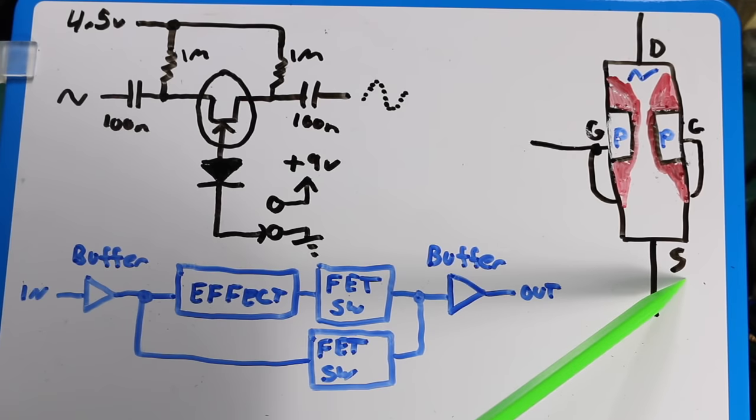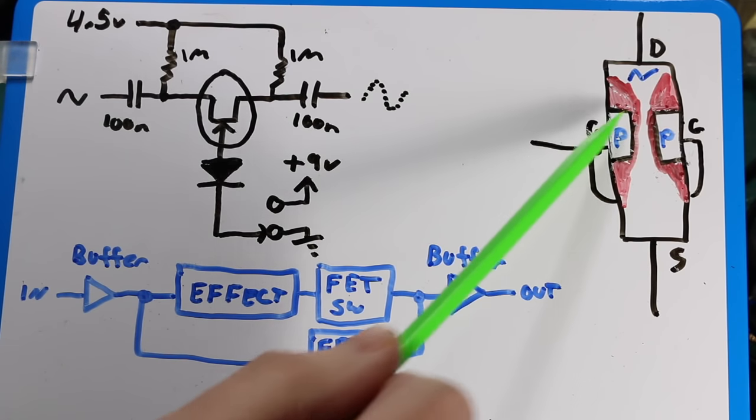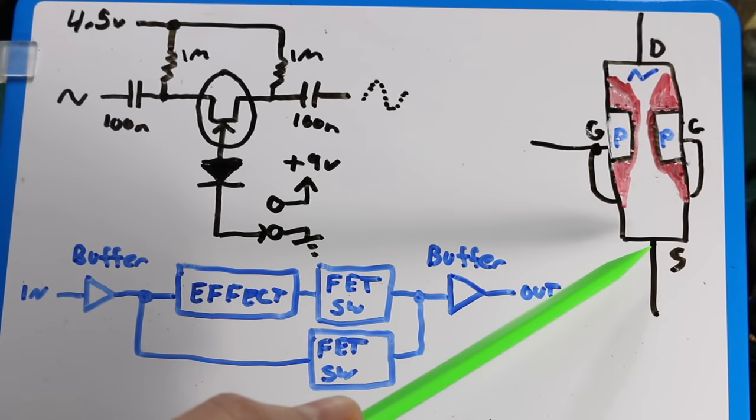If the source is ground and the gate is also ground, there's no gate to source voltage, the P-N junction is not reverse biased, and this channel from drain to source is as open as it will get, and the FET is fully on.